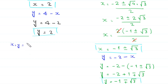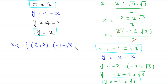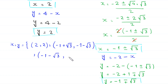So the final set of solutions for x comma y is: the first pair is 2 comma 2; the second pair is negative 1 plus root 3 comma negative 1 minus root 3; and the third pair is negative 1 minus root 3 comma negative 1 plus root 3. This is the final answer for this problem.